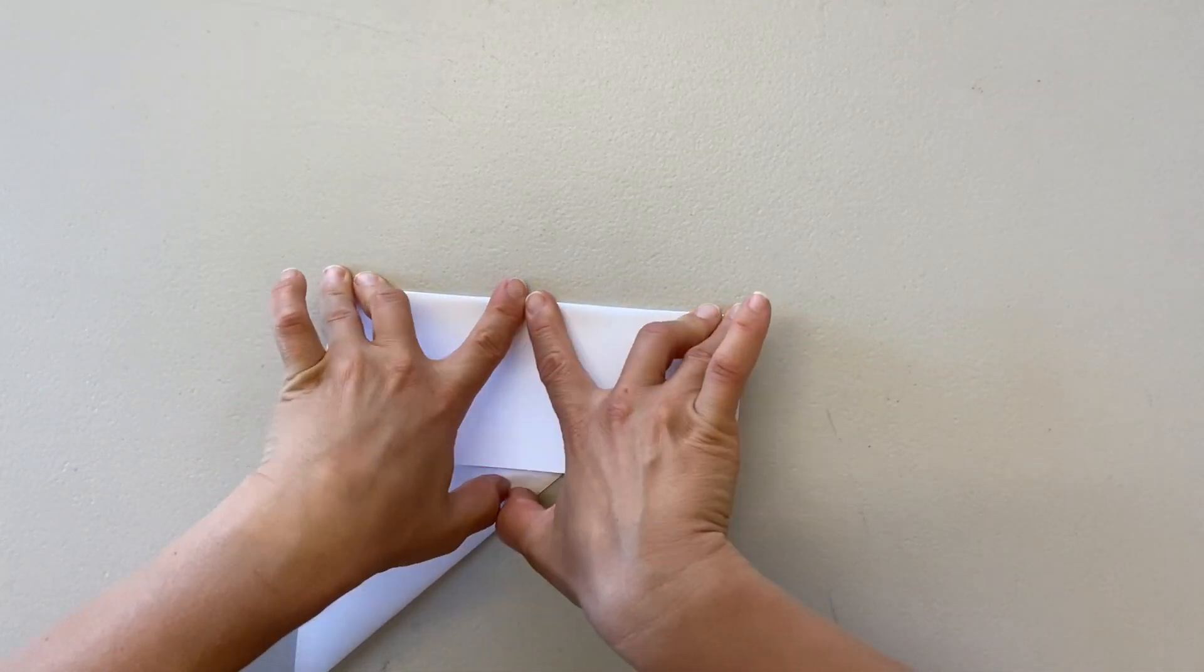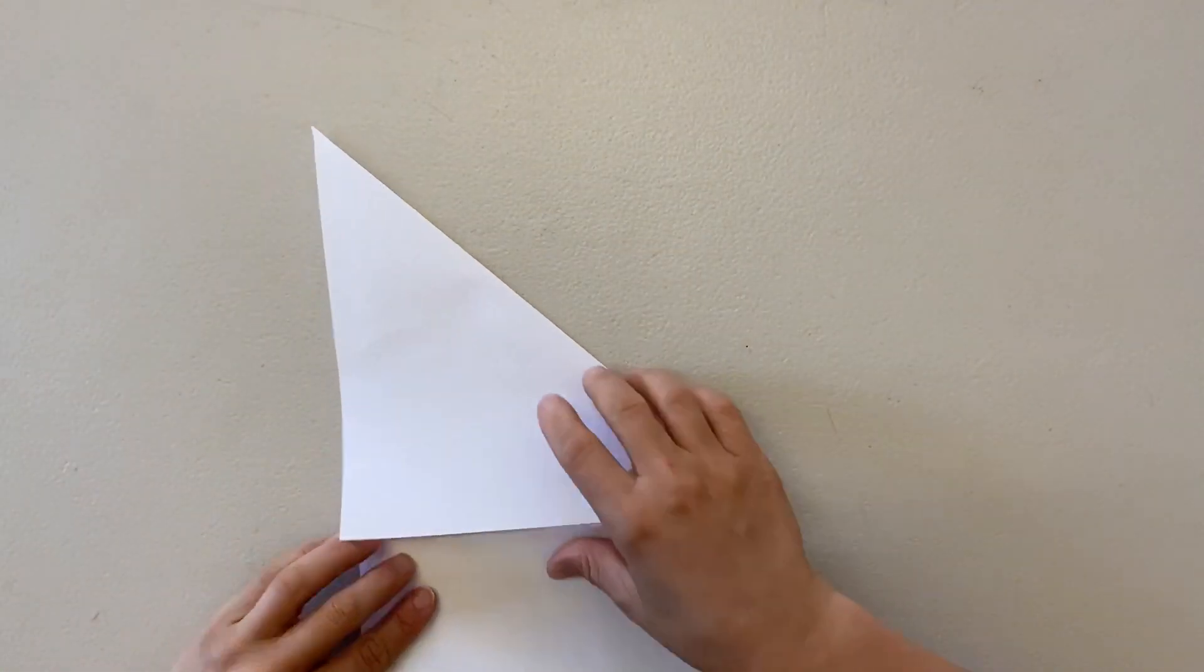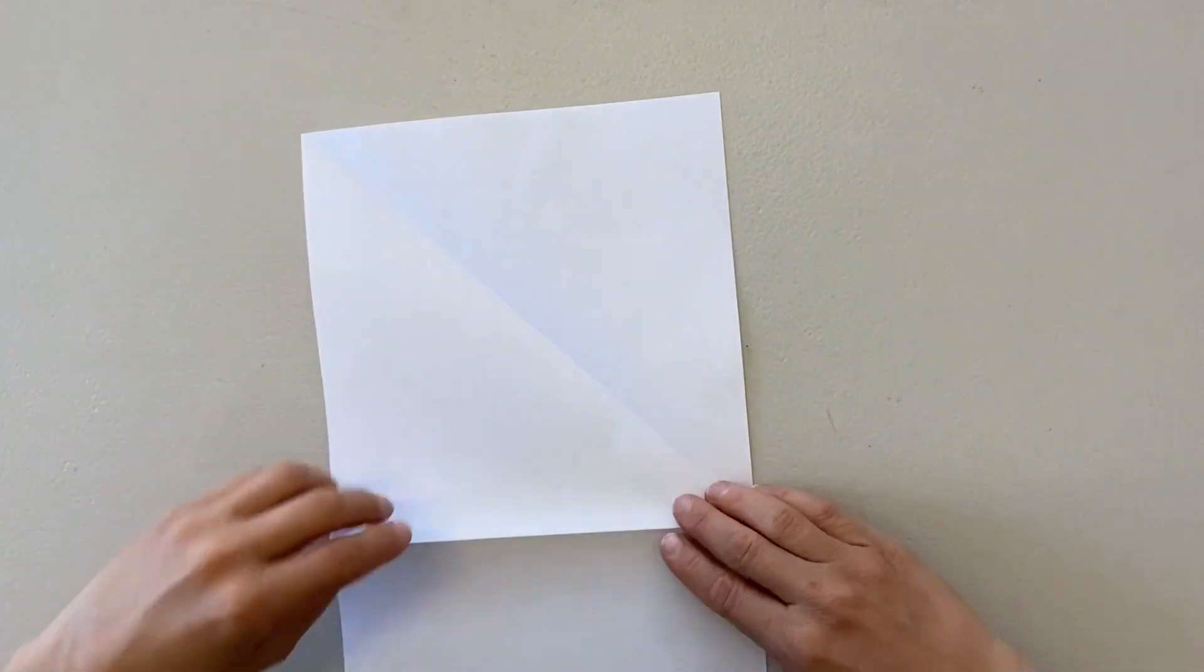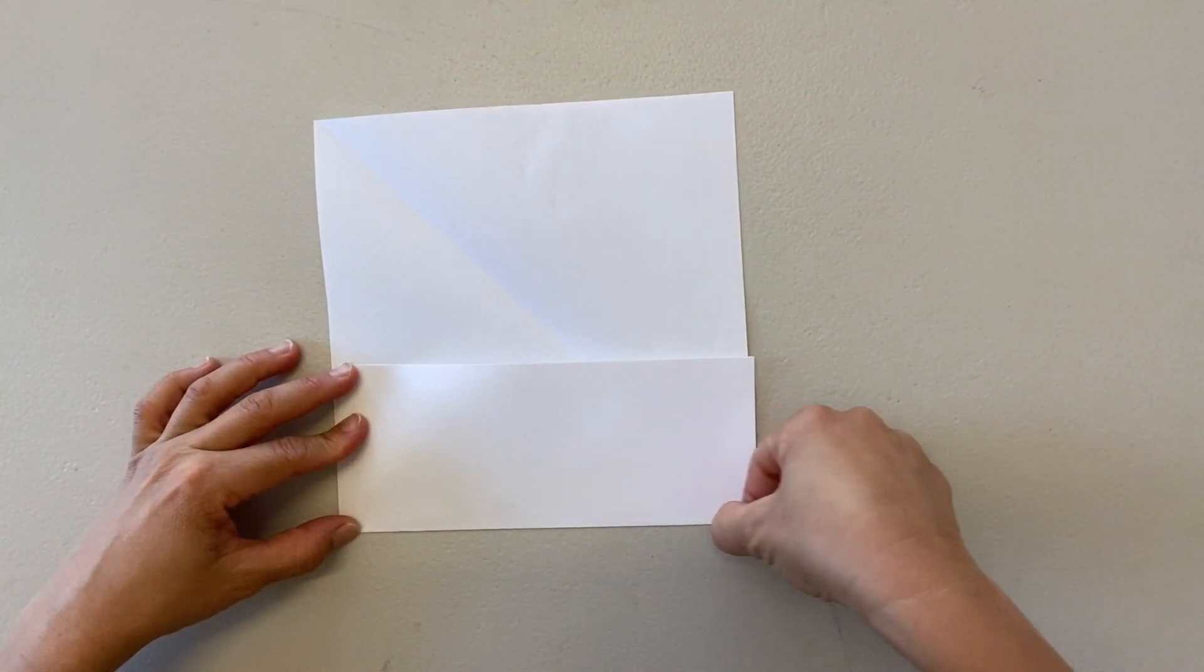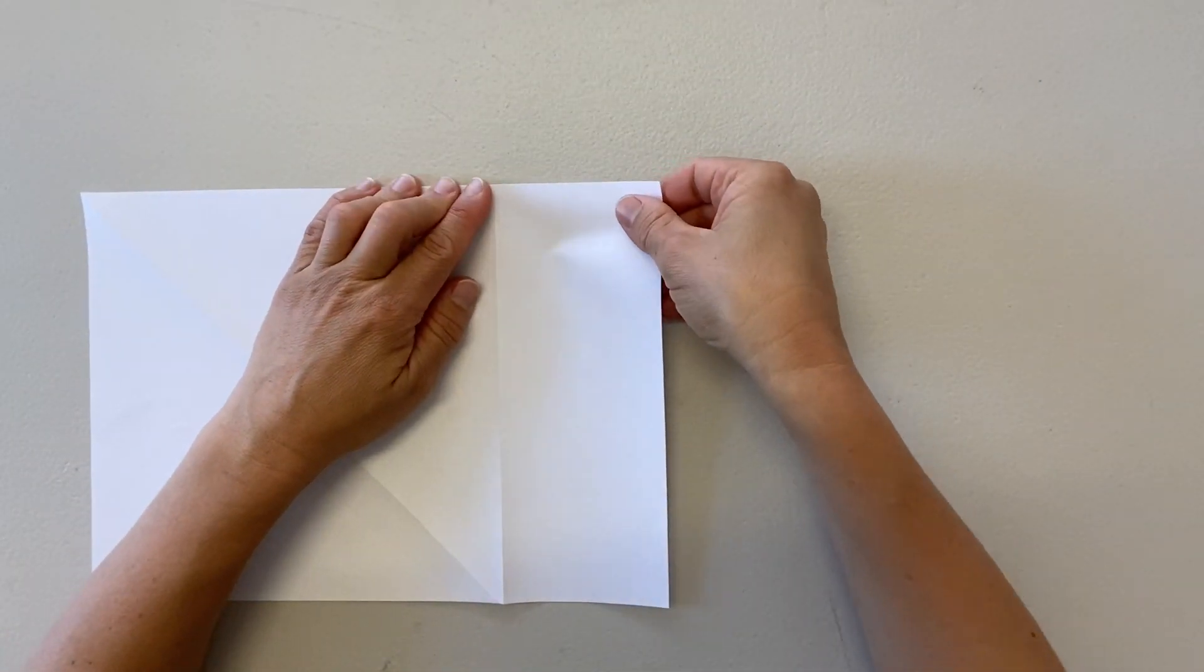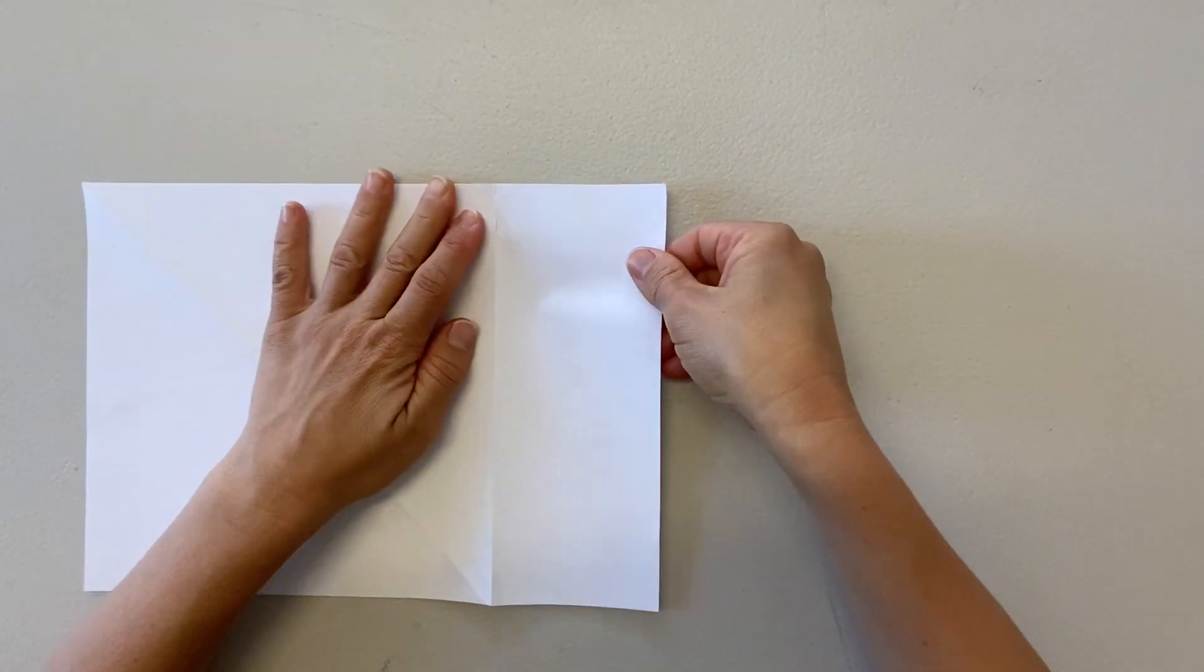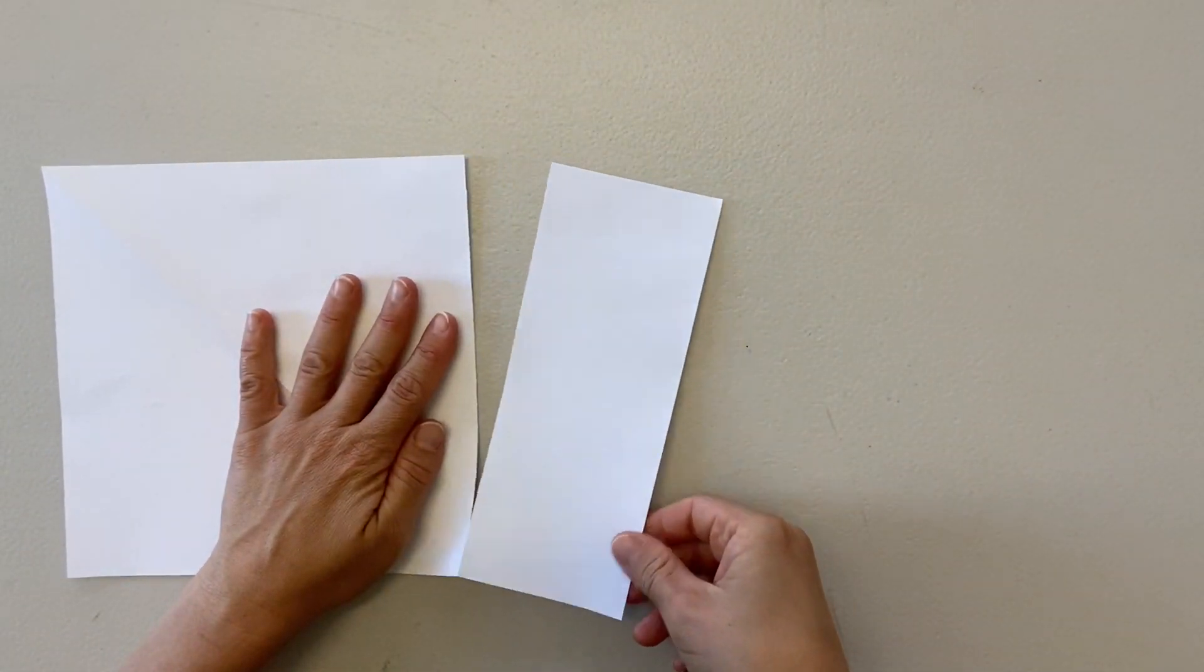You can cut along this folded line, or you can fold it the other way, which is what I'm doing, and then gently tear it. Once this section is removed, we have our square and we can begin to fold our crow.